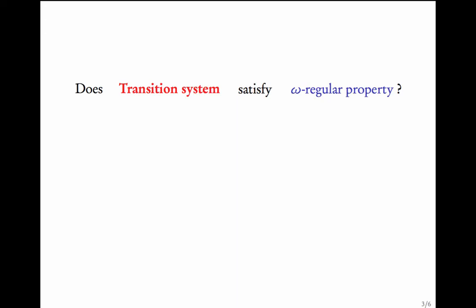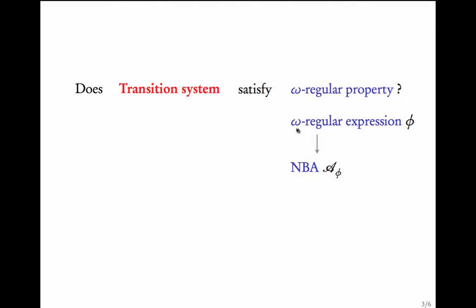The question we are interested in is: does a transition system satisfy an omega-regular property? An omega-regular property is specified using an omega-regular expression phi. Given a transition system and an omega-regular expression, we want to check if all traces of this transition system belong to the language of this omega-regular expression. We will see that every omega-regular expression can be converted to a non-deterministic Büchi automaton A_phi, such that the language of the expression equals the language of this automaton.